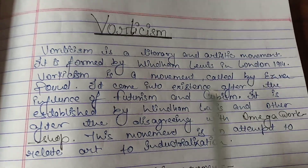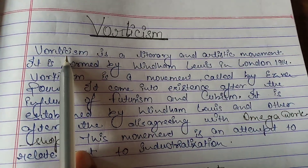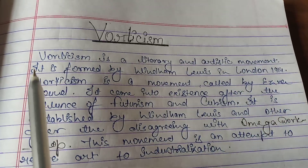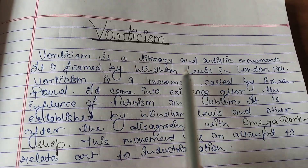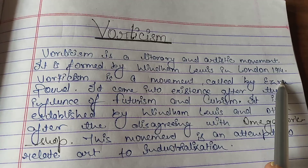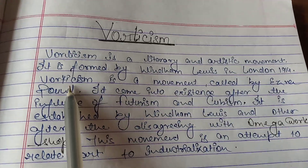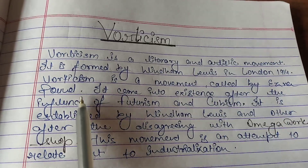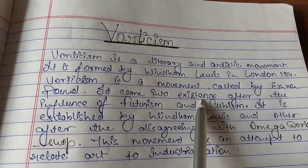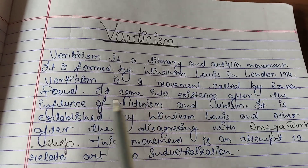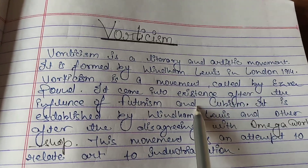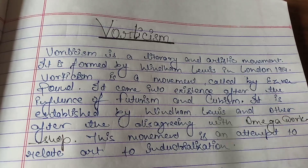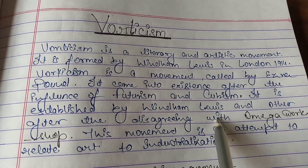Vorticism is a literary and artistic movement. It was formed by Wyndham Lewis in London in 1914. Vorticism is a movement named by Ezra Pound. It came into existence after the influence of Futurism and Cubism. It is established by Wyndham Lewis and others after disagreeing with the Omega Workshop.